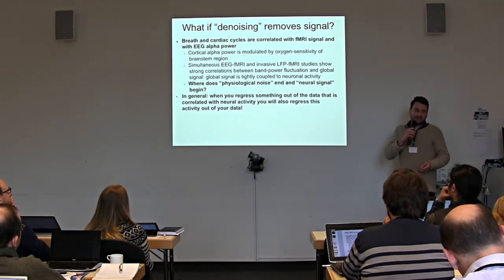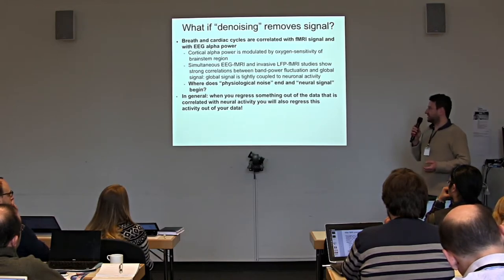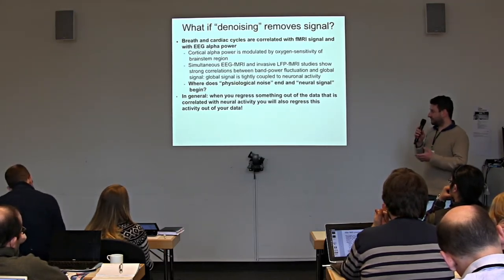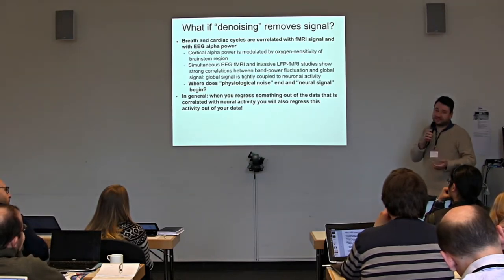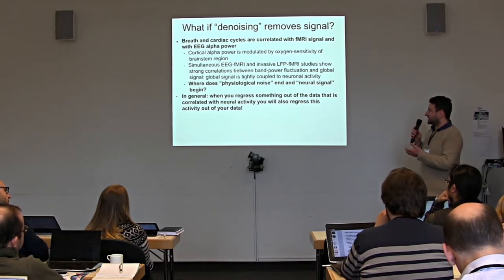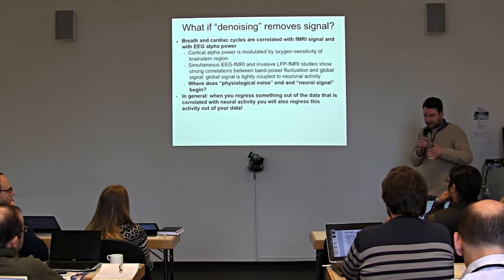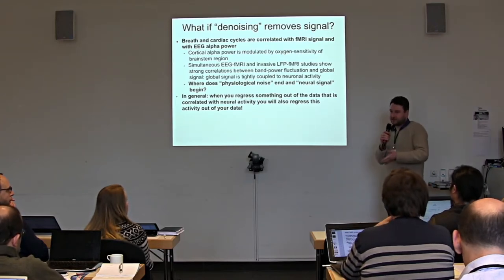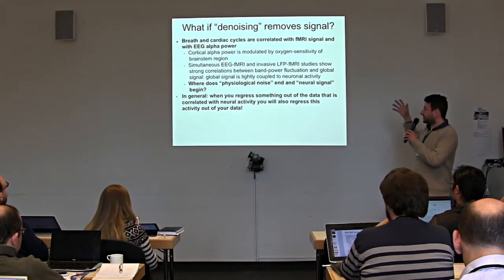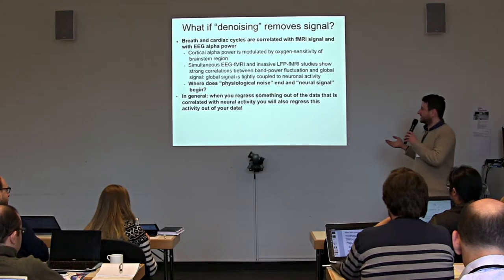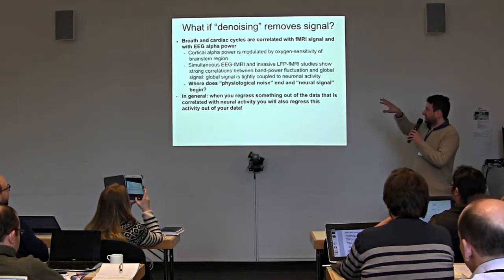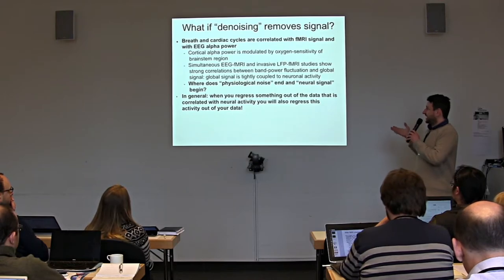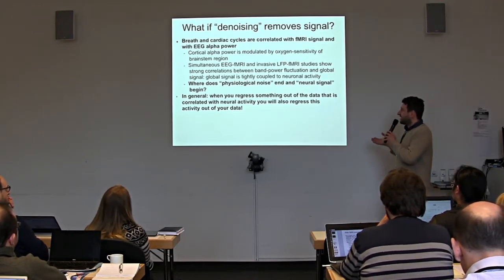Movement regressors are often correlated with the global signal. When you regress something out that is correlated with the global signal, you will also regress out neural-related variance. Subjects had a chest belt to measure breathing, and breath rate fluctuation is strongly correlated with mean BOLD signal — you even see a stripe pattern in gray ordinate time series for some subjects, while another subject doesn't have this at all. This considerably impacts functional connectomes: if all time series are highly correlated, you have a very red functional connectome. It's really not an easy issue — whether physiological noise ends and neural signal begins is very hard to disentangle.